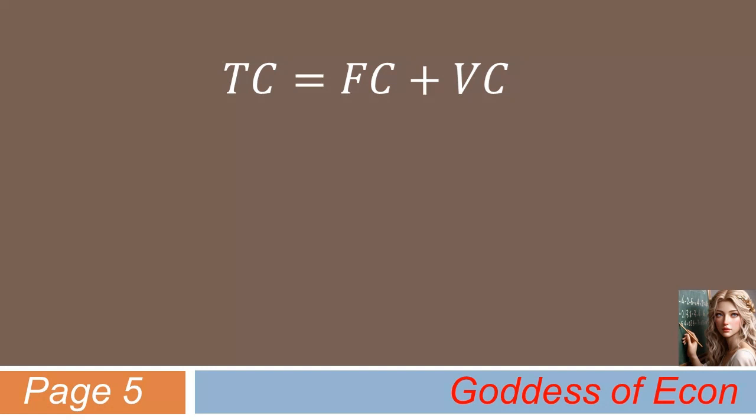But the variable cost is the kind of cost that depends on how much you produce. Naturally, this kind of cost will increase as more goods are produced. This is because normally more input is needed to increase the quantity produced. The more the input, the higher the cost of production.